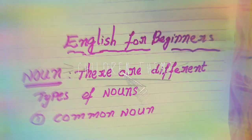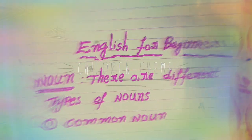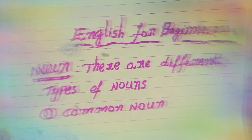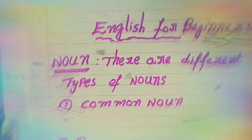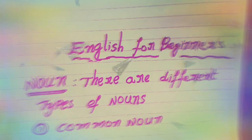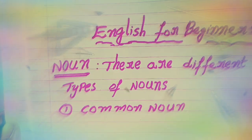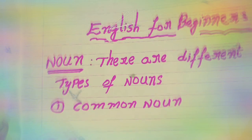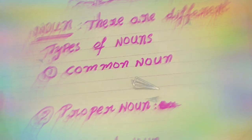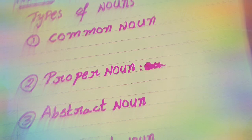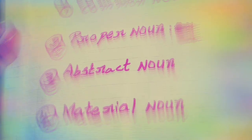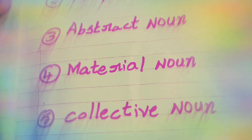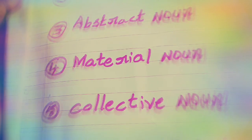Hello, good morning everyone. Today we are discussing types of nouns. There are several types of nouns: one is common noun, second one is proper noun, third one is abstract noun, fourth one is material noun, and fifth one is collective noun.